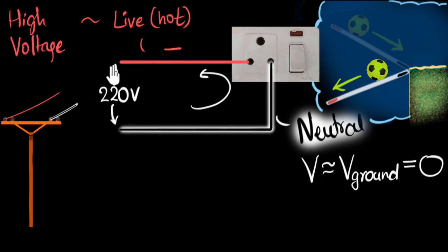But in short, the live wire is at a very high voltage compared to the ground, but the neutral wire has voltage very close to that of the ground.